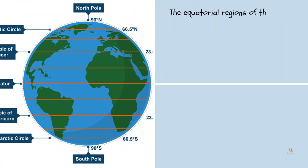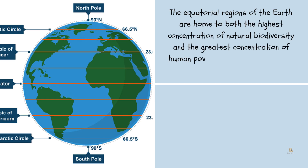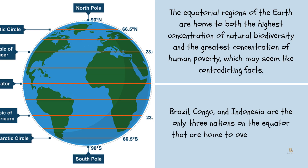The equatorial regions of the Earth are home to both the highest concentration of natural biodiversity and the highest concentration of human poverty, which may seem like contradicting facts. Brazil, Congo, and Indonesia are the only three nations on the equator that are home to over half of the world's rainforests.